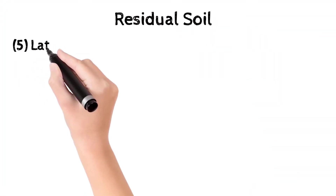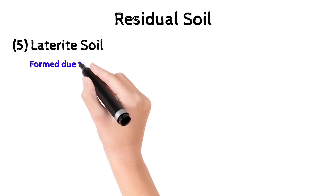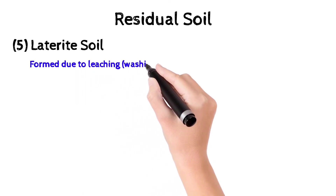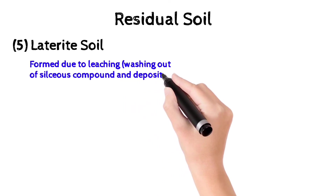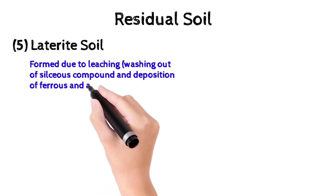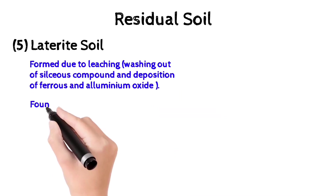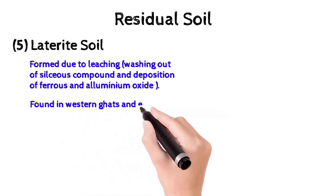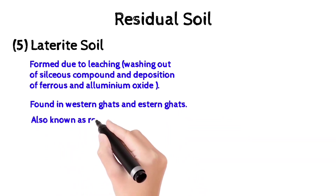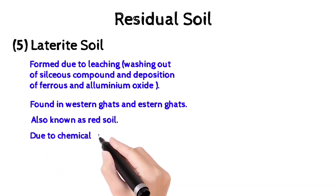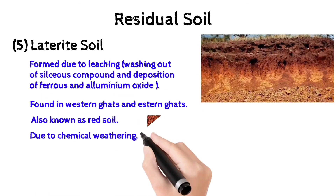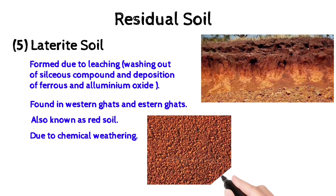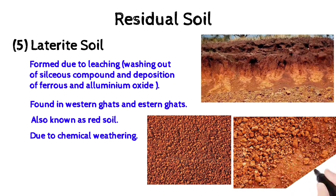The fifth classification of residual soil is laterite soil. It is formed due to leaching, that is washing out of silica compounds and deposition of ferrous and aluminium oxides. Due to the presence of ferrous oxide, its color is red — that's why it is also called red soil. It is found in the Western Ghats and Eastern Ghats and is formed by chemical weathering.